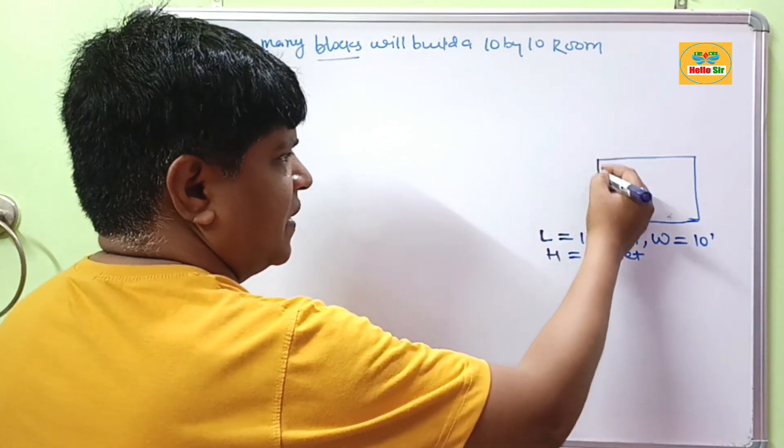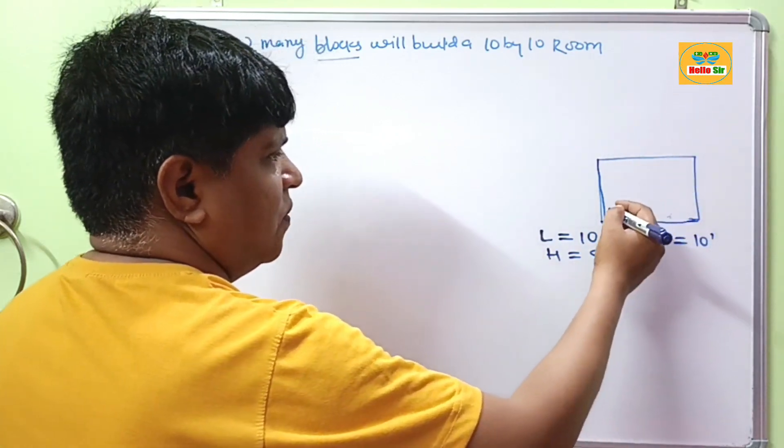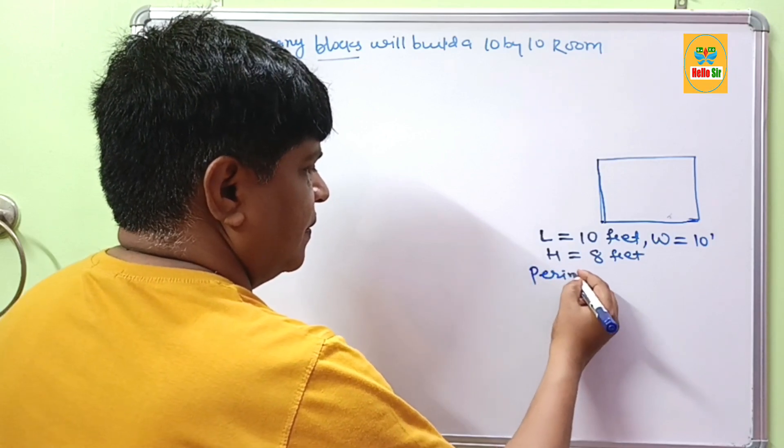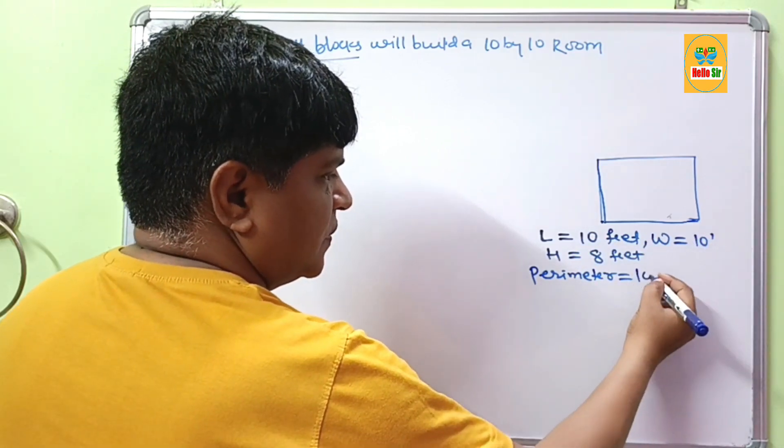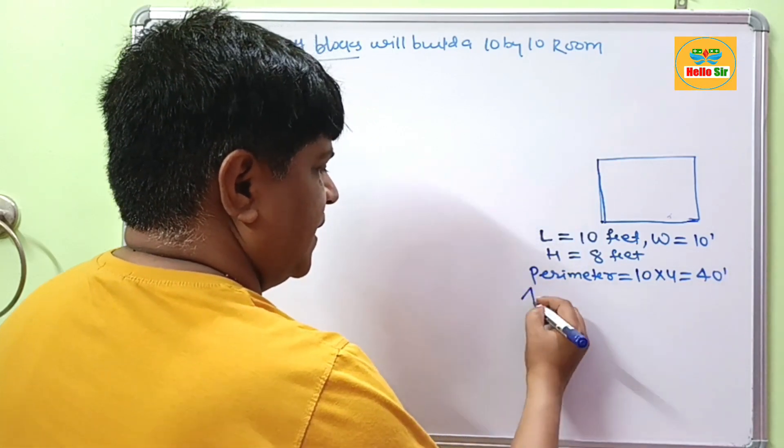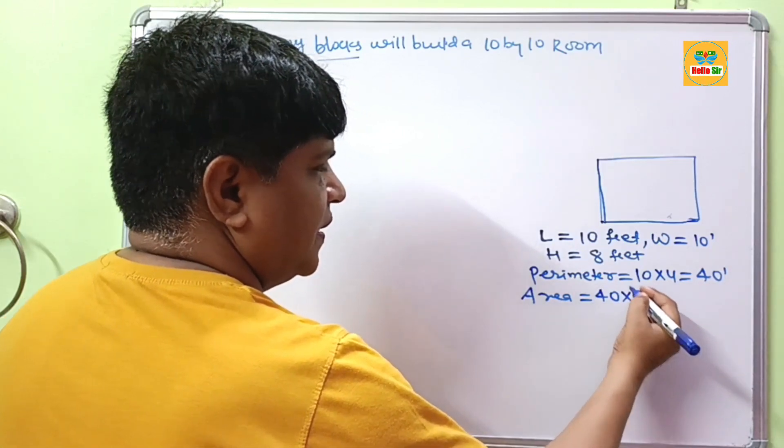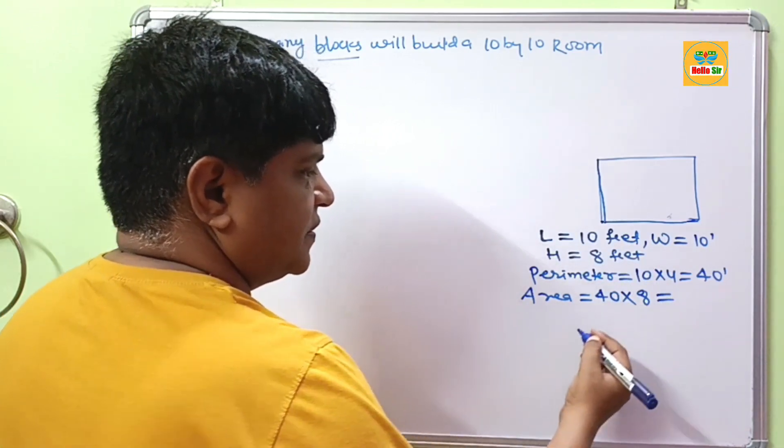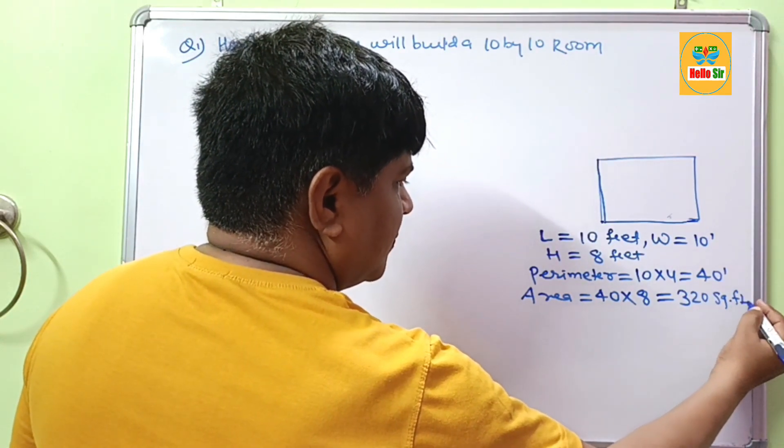First, you have to find out the perimeter. After this, we calculate the area of 4 walls of this room. Perimeter means each side is 10 feet, so 4 sides equals 40 feet. Area equals perimeter of 40 feet multiplied by the height of 8 feet. This will come to about 320 square feet.